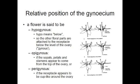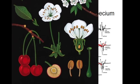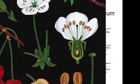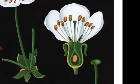Another way of describing this is to say the flower is hypogynous — so the ovary is sitting above the level of insertion of the other flower parts — or epigynous if the sepals and the petals appear to come from the top of the ovary, or perigynous if the other floral parts appear to be fused into a cup and surround the ovary.